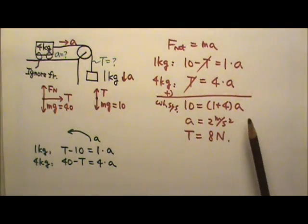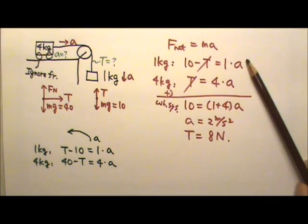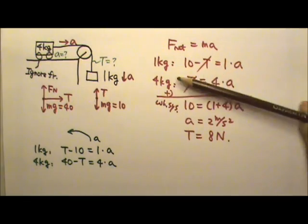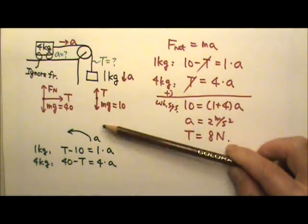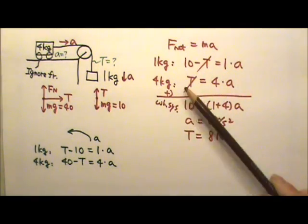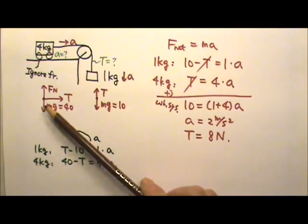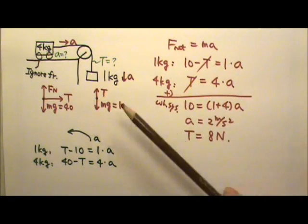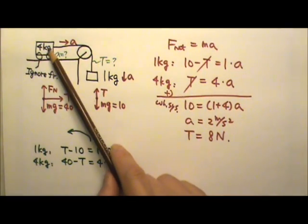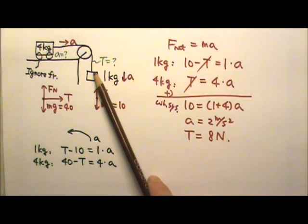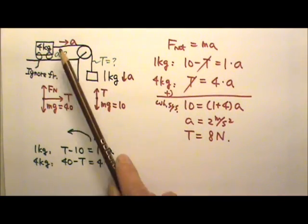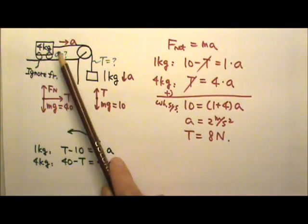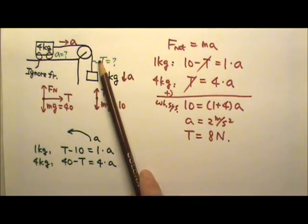One more note. Over here, I added two force equations together. A vertical equation for the 1 kg box. And a horizontal force equation for the 4 kg box. This is OK because the different direction is caused by the bending of the string over the pulley. These two accelerations are in a way the same because it is the same string moving this way.